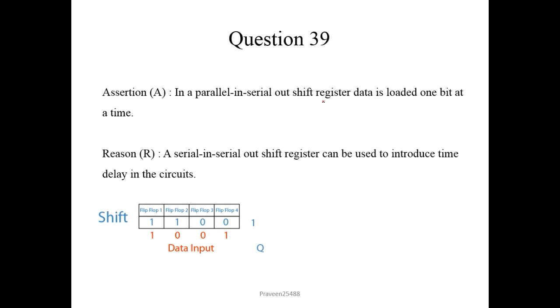Question number 39. In a parallel in serial out shift register, data is loaded 1 bit at a time. So here in this example you can see that this is parallel in. All these 4 bits are parallel in and serial out. So here 4 bits we are loading at a time, not 1 bit. So this statement going to be wrong. A serial in serial out shift register can be used to introduce time delay in circuits. So here you can observe that this is serial in serial out. It introduces the time delay in the circuit. That time delay will be equal to the total propagation delay of the flip flops which is used in the circuit. So this statement is going to be correct. So A is false, but R is true. So we will choose option 4 here.